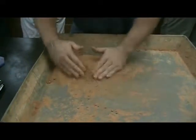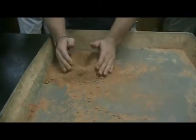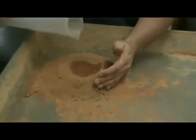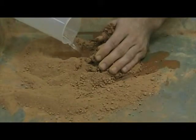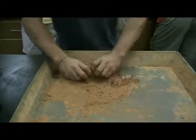Sieve out 1,000 grams of minus 4 material. Then, add enough water to bring material up to optimal moisture content and mix well.